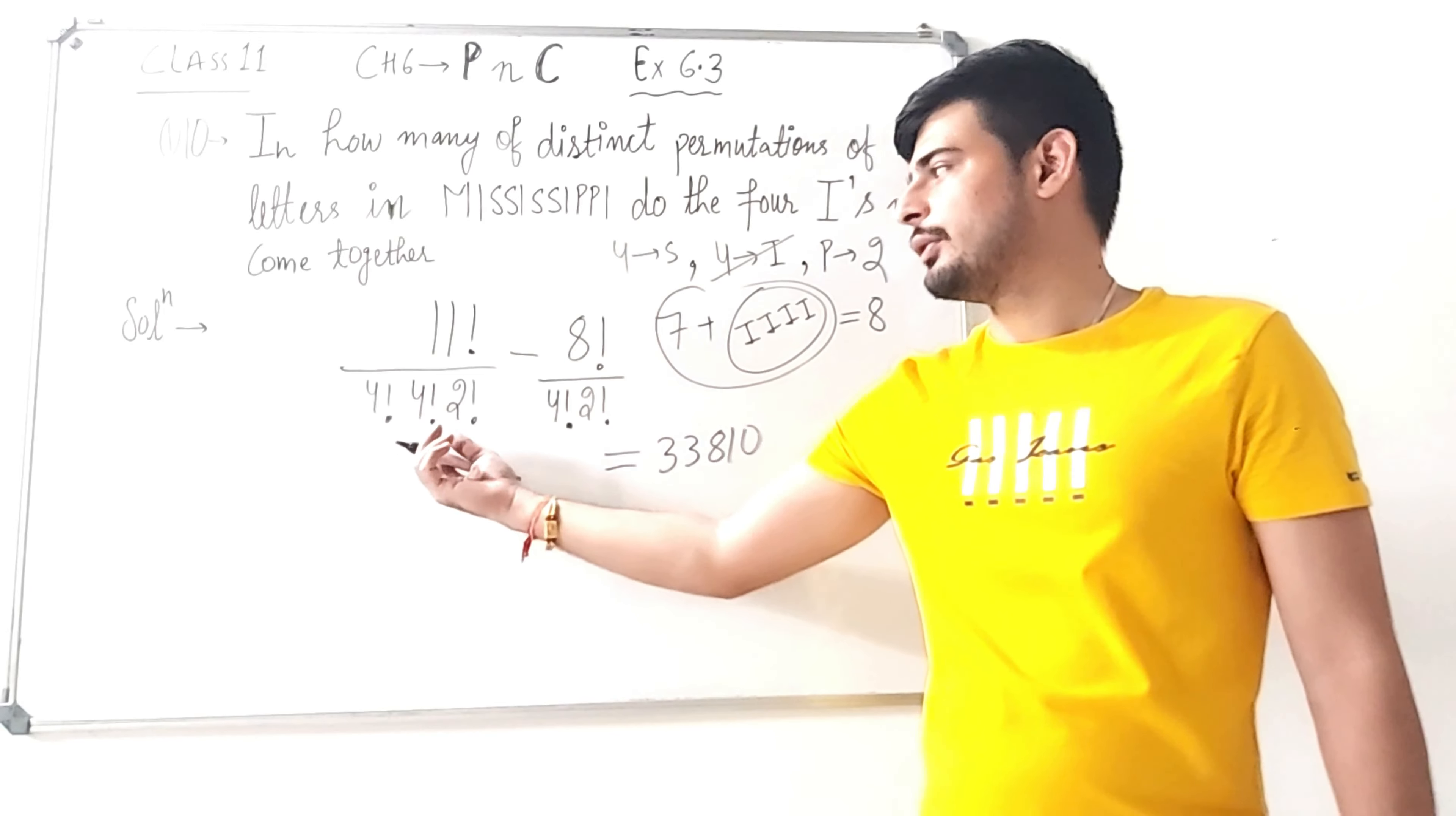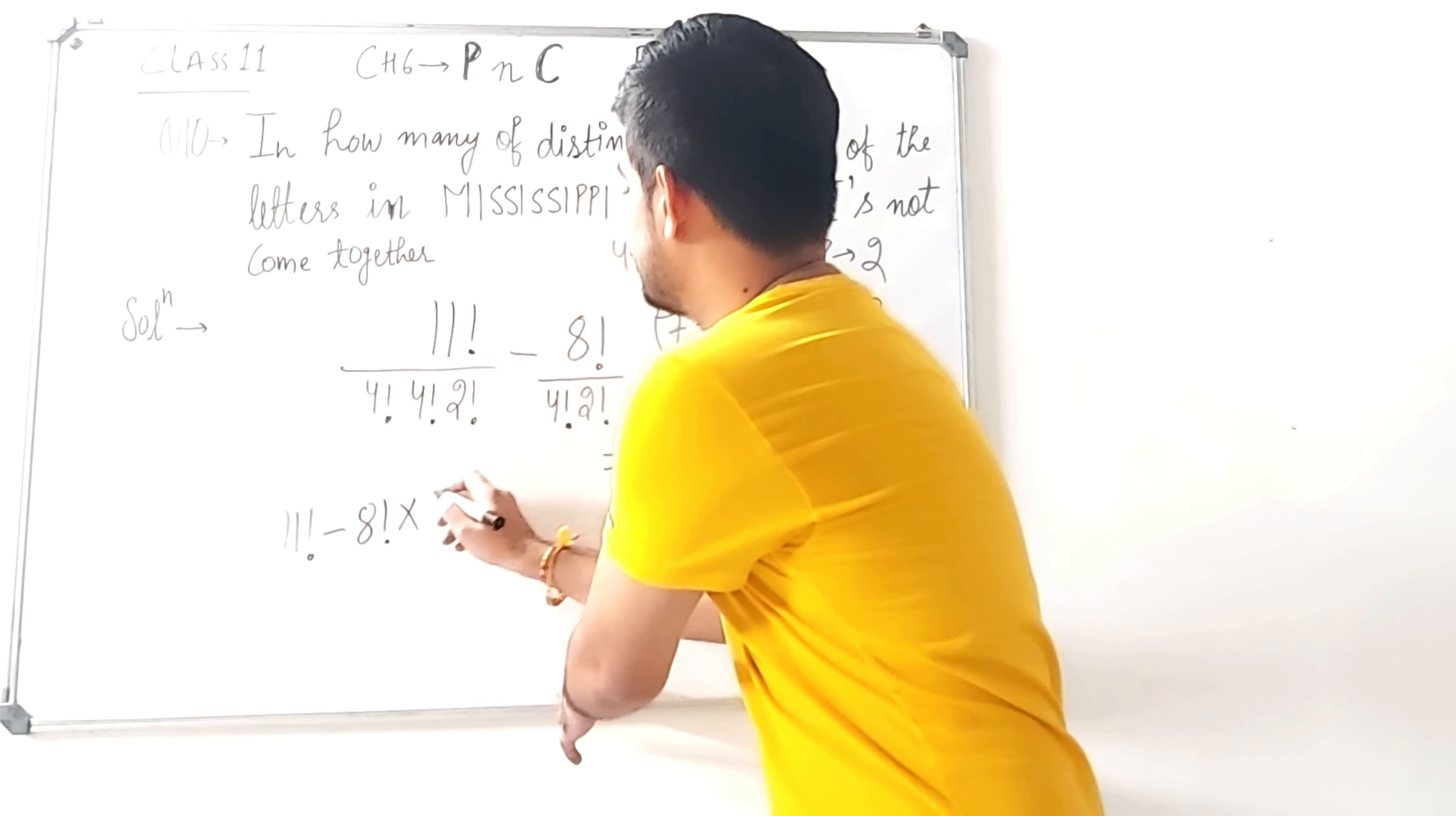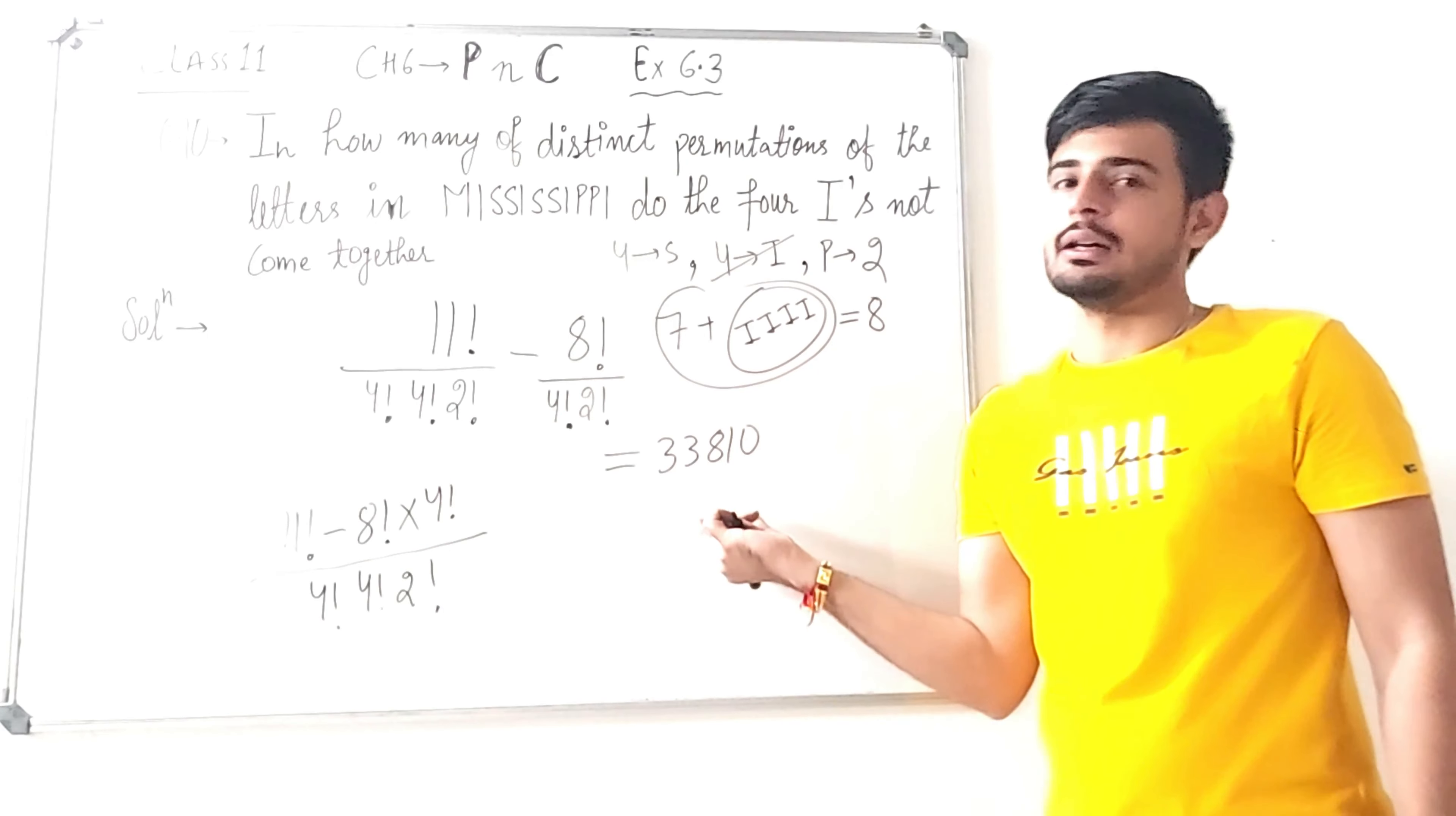LCM will be 4 factorial into 2 factorial. When we take LCM, we will get 11 factorial minus 8 factorial multiplied by 4 factorial and divided by 4 factorial, 4 factorial, and 2 factorial. Now students, we can take 8 factorial as common and simplify to get our answer.